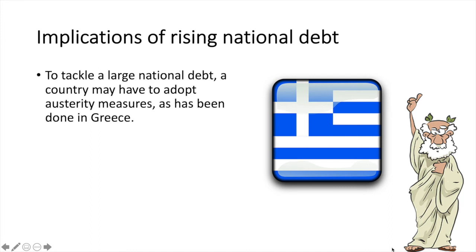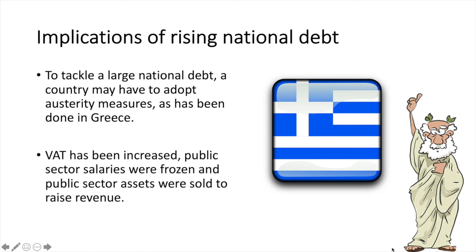To tackle a large national debt, a country may have to adopt austerity measures, as has been done in Greece. Austerity involves government policies aimed at cutting back spending and increasing tax collection in order to address national debt issues. In Greece, VAT has been increased, public sector salaries were frozen, and public sector assets were sold to raise revenue. These are just some of the policies that have been used in Greece.